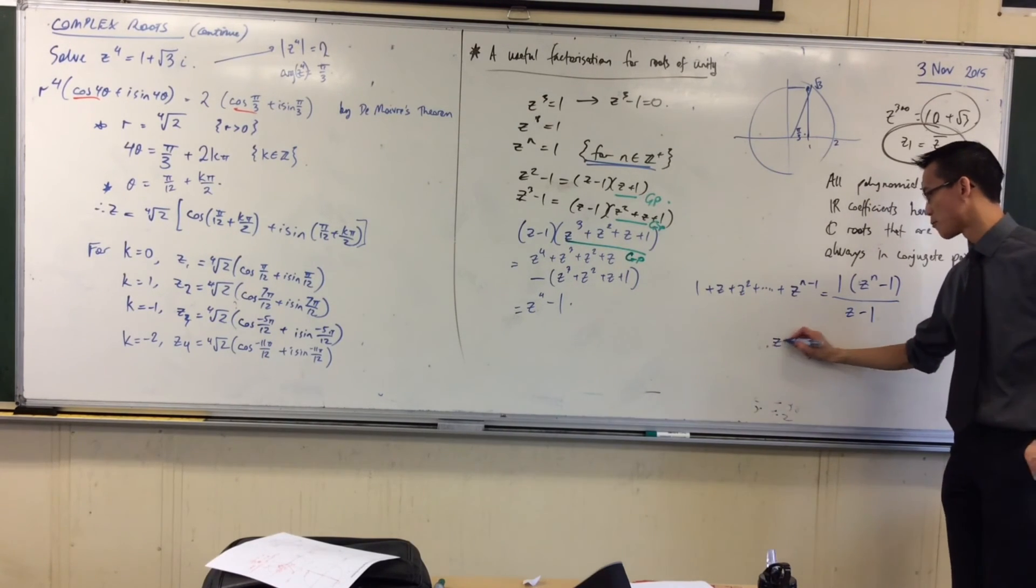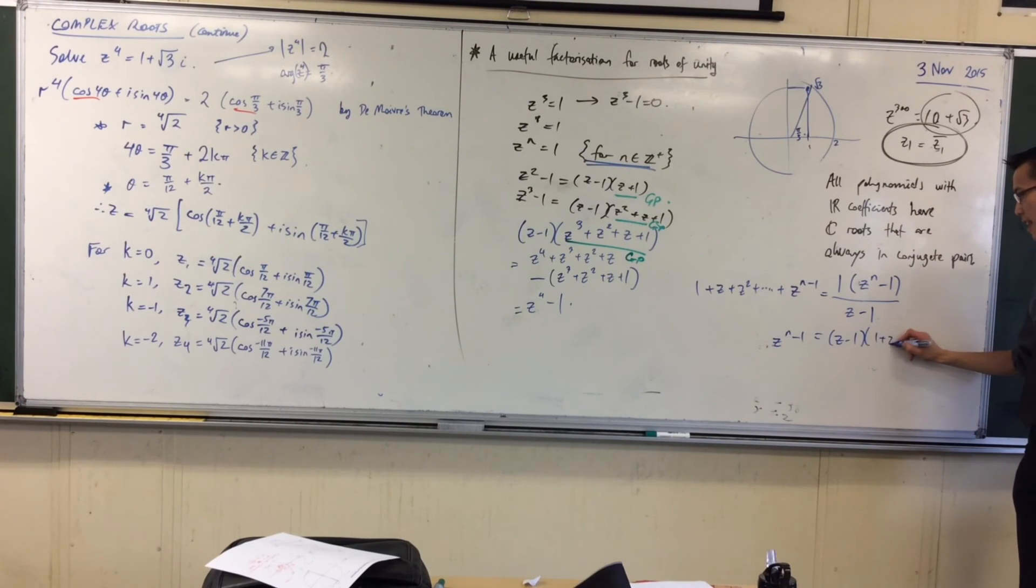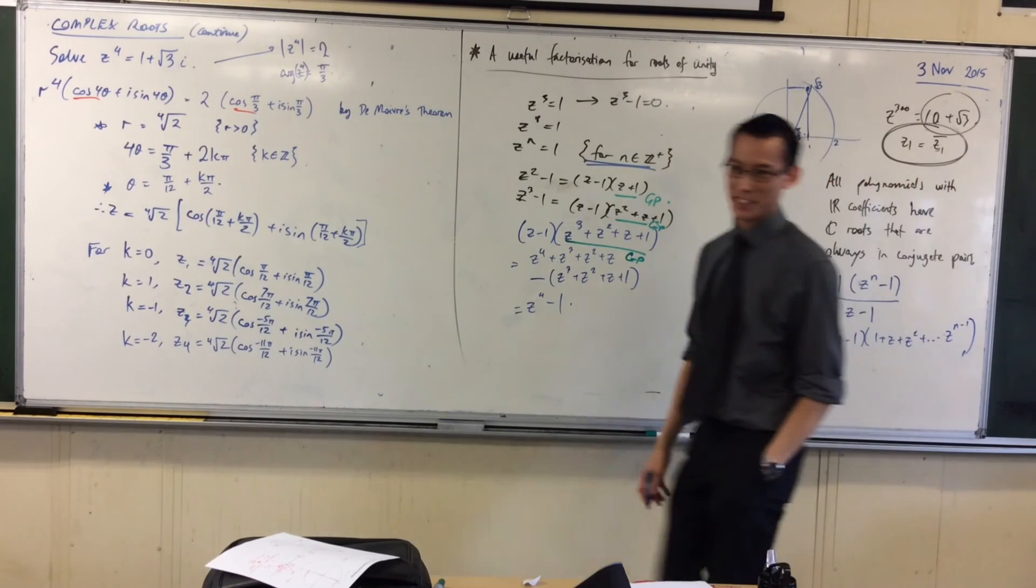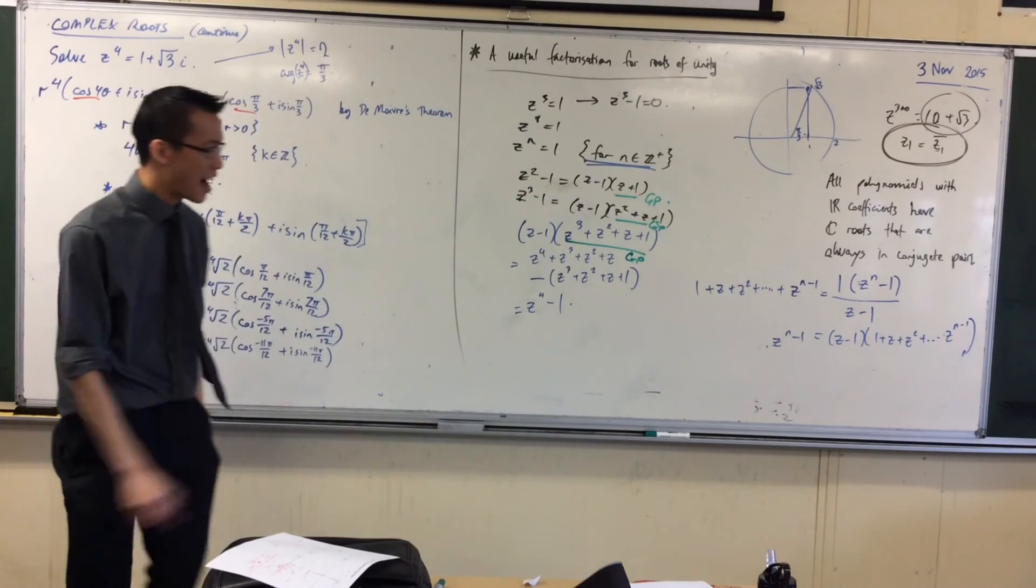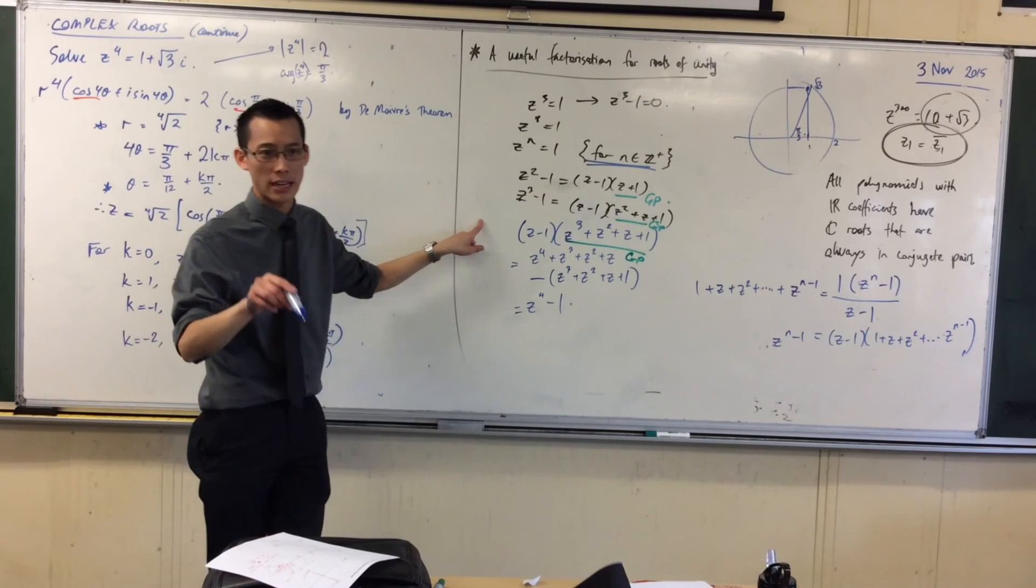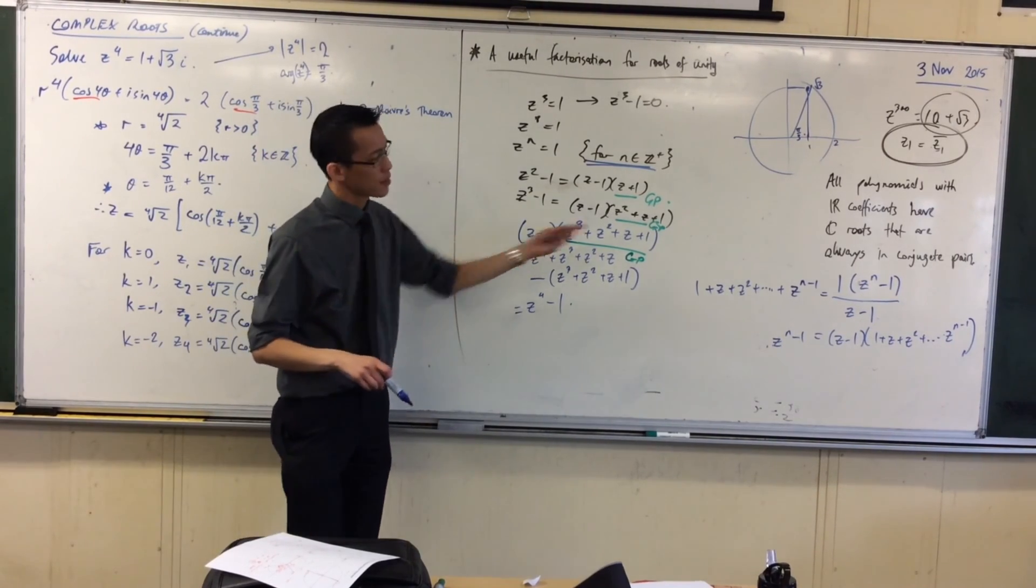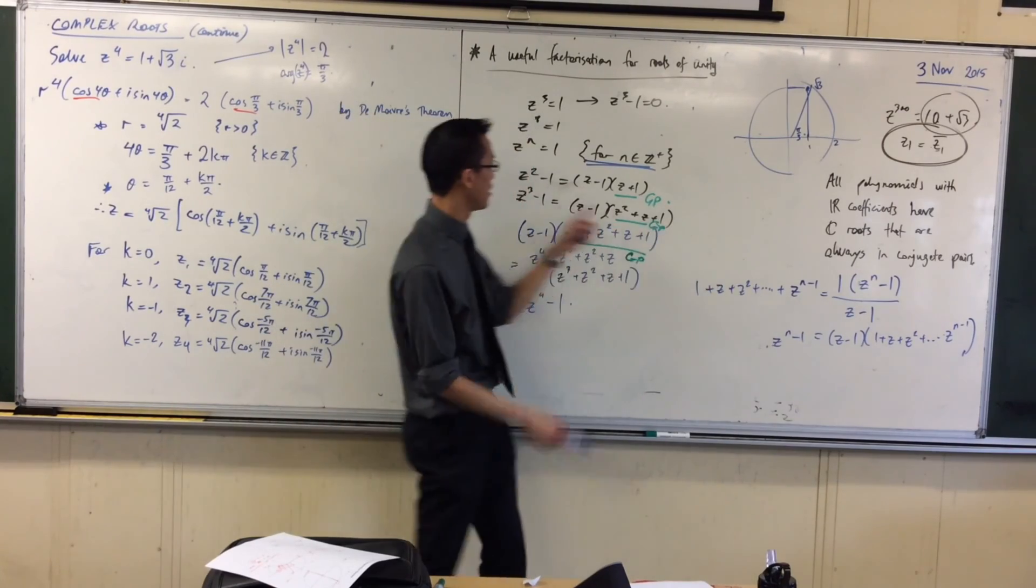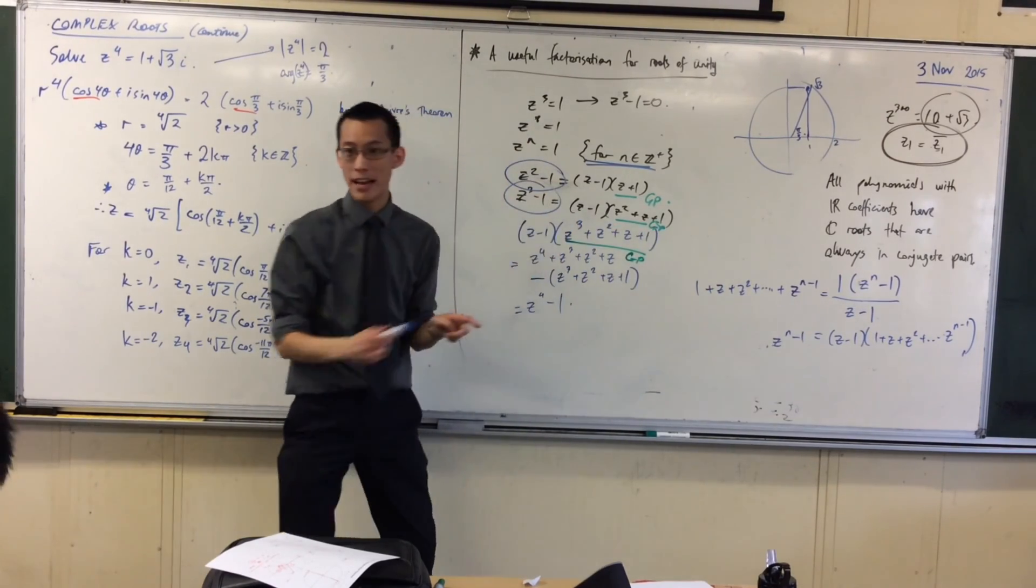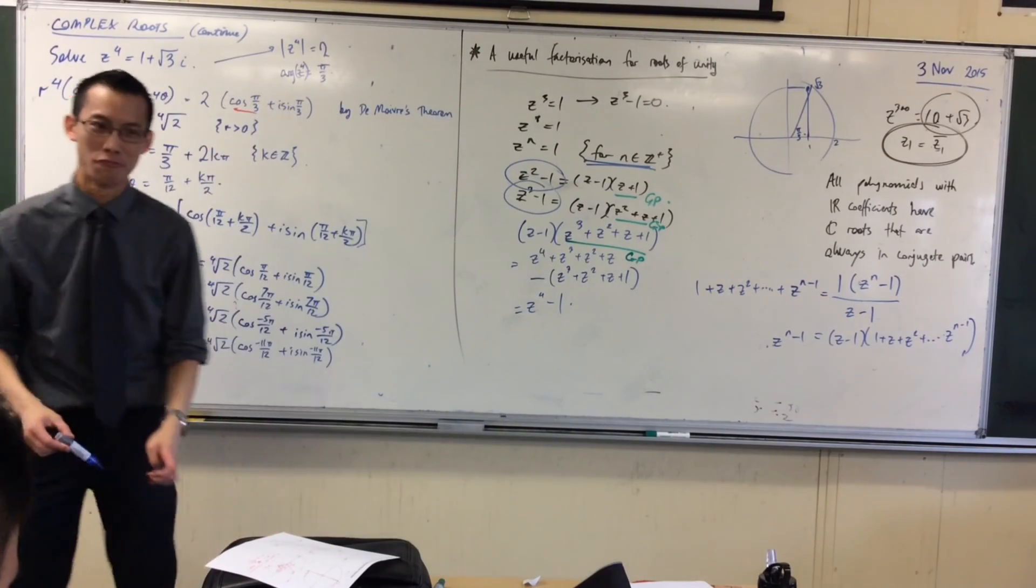Oh, snap. You multiply both sides by z take away one, and there is your magic factorization in, like, barely two lines. Now, that's a really important result, because every time you're dealing with roots of unity, which is what you're going to be looking at in the second half of 1.5, I think, you're going to have to deal with an equation like this, which needs to be factorized. And now you can factorize for any power, which is really astounding.